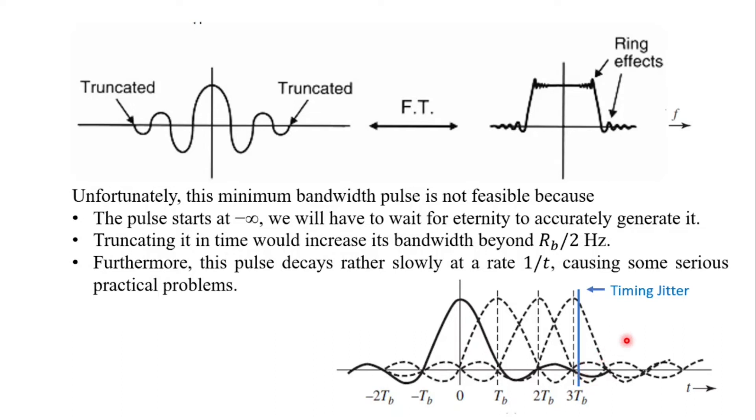The side tails of other pulses can sum up to corrupt the pulse detection. Hence the solution required is to find a pulse p which decays faster than 1 by t, albeit it satisfies Nyquist's first criterion for 0 ISI.